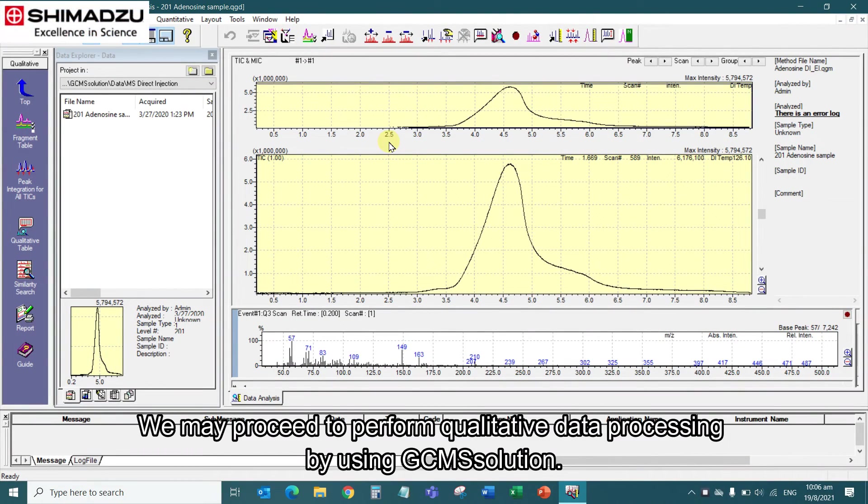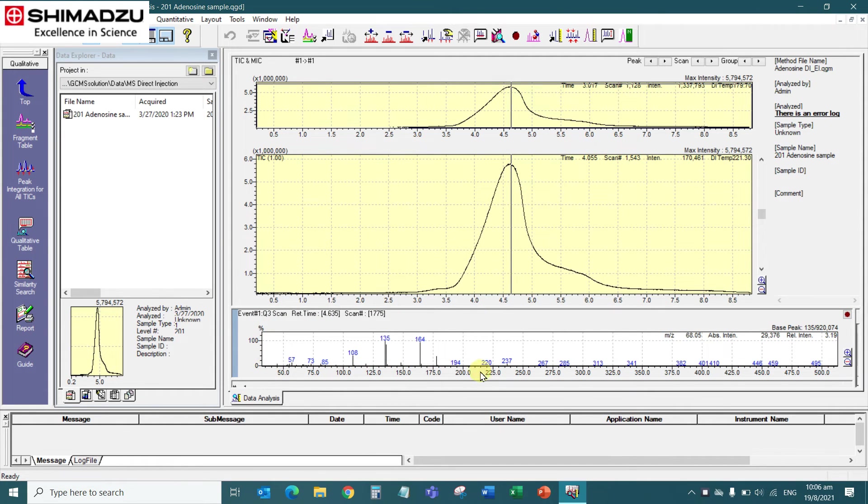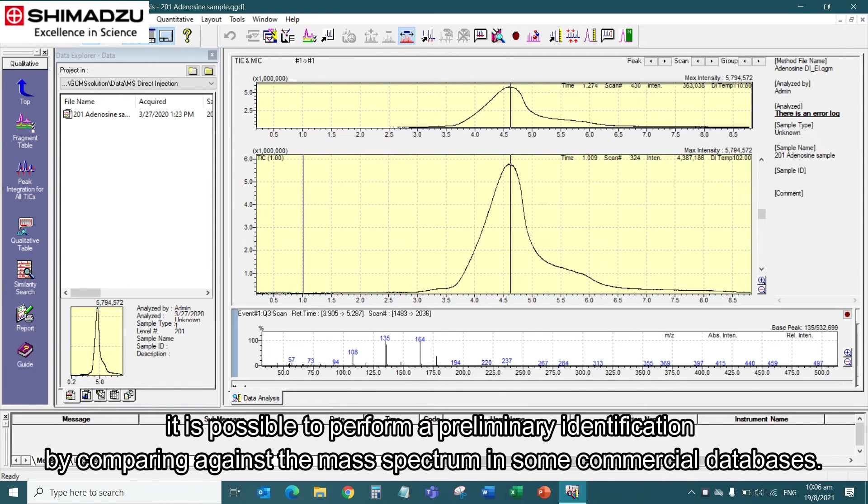We may proceed to perform qualitative data processing using GCMS solution software. The data acquired contains the mass spectrum of the analyzed sample. With the acquired mass spectrum, it is possible to perform preliminary identification by comparing against mass spectra in commercial databases.